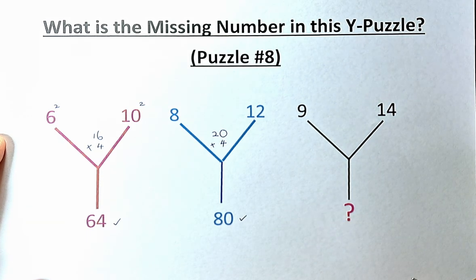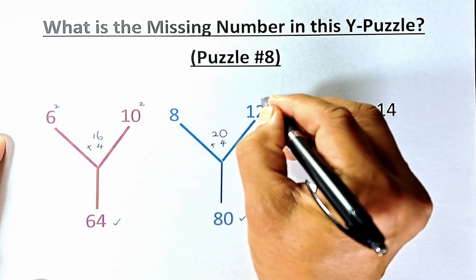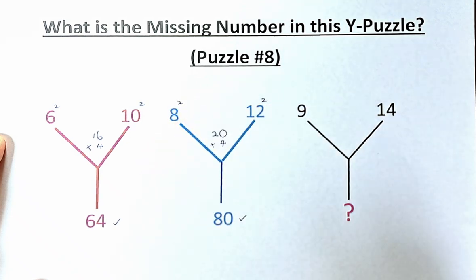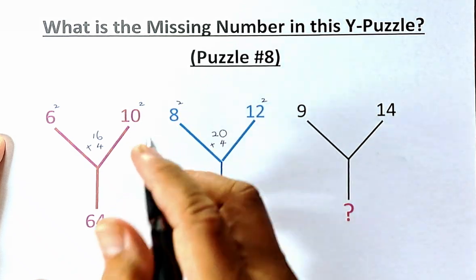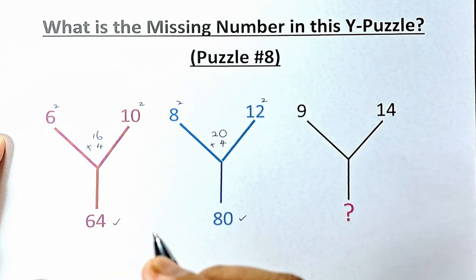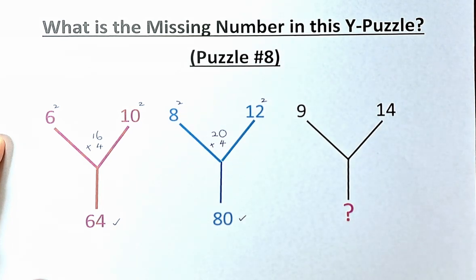The fastest way is 12 squared is 144. 144 minus 8 squared is 64. 144 minus 64. And the answer is 80.